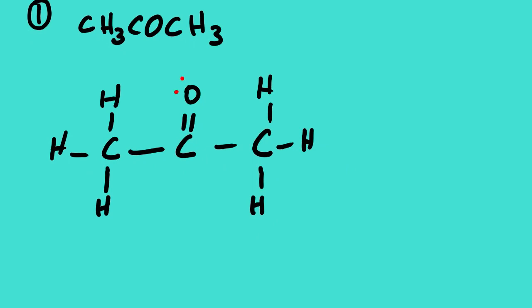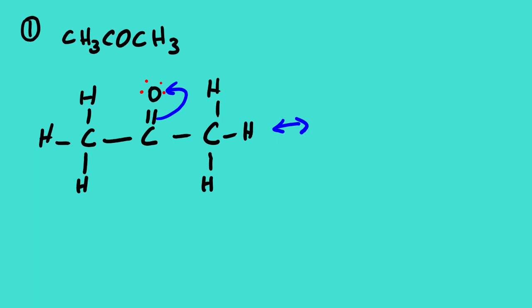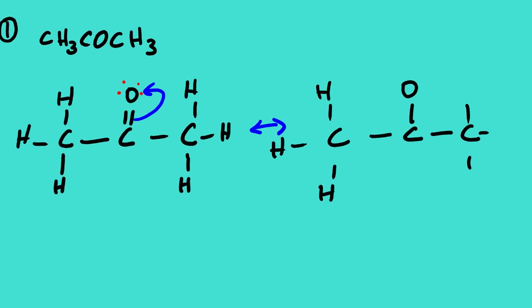We know that oxygen will have two lone pairs. Then we identify the pi bond. You can see the pi bond is here. Then we are going to shift the pi bond towards oxygen. We no longer have double bond. We no longer have pi bond. We only have a single bond. And then our oxygen will be electron rich. And then our carbon will have a positive charge. So this is the resonance structure for this.